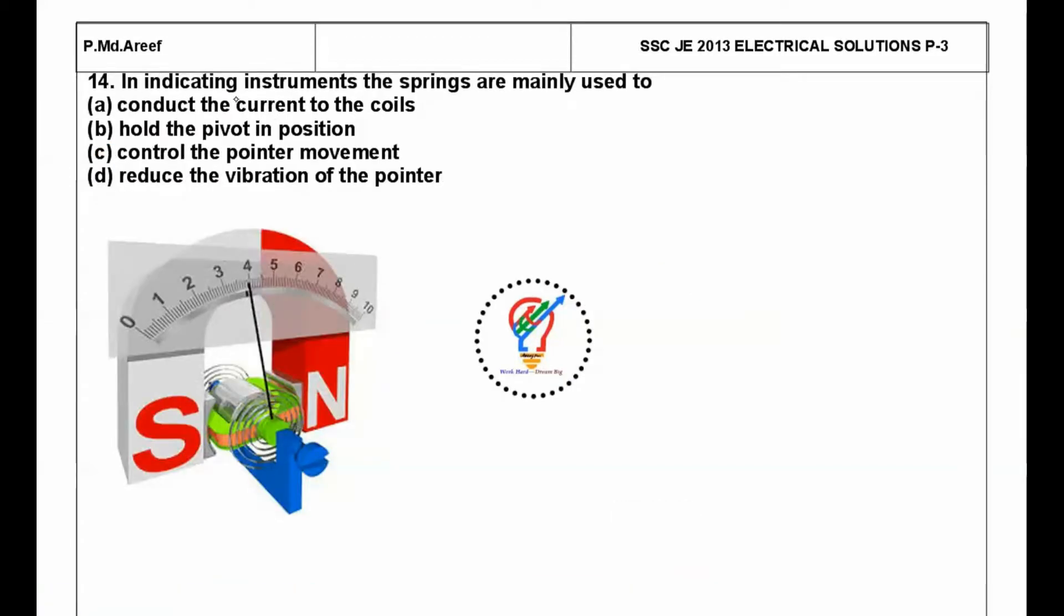Next question: in indicating instruments the springs are mainly used to? As you can see here, the springs are mainly used to produce controlling torque, that means control the pointer movement, and second, it is used to carry the current. So the second option is current and conduct current to the coils.